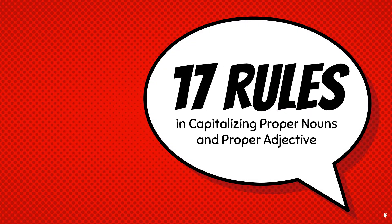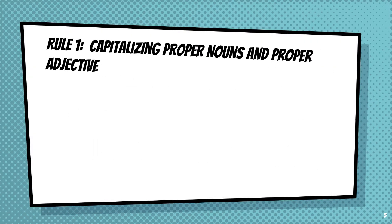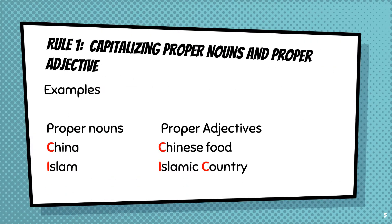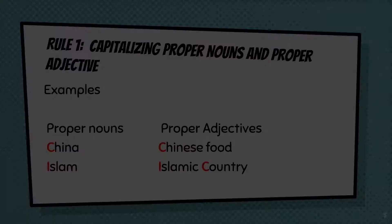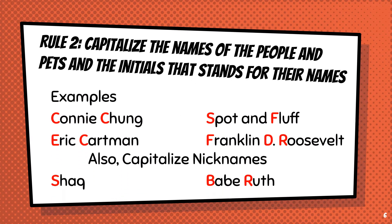Did you know that there are 17 rules in capitalizing proper nouns and proper adjectives? First rule: capitalizing proper nouns and proper adjectives. Second rule: capitalize the names of people and pets and the initials that stand for their name.